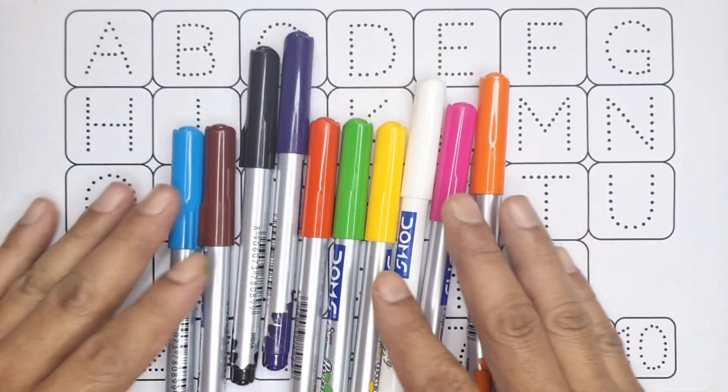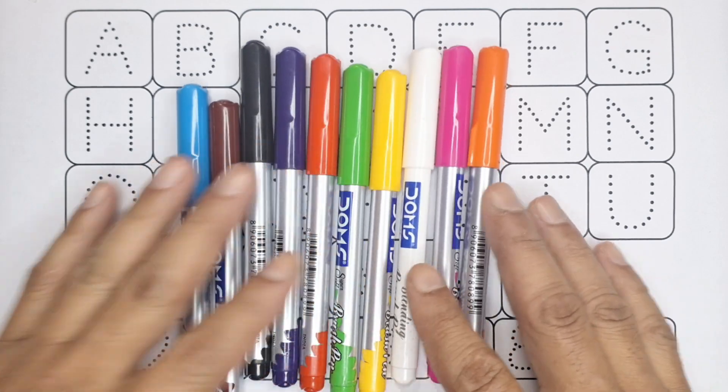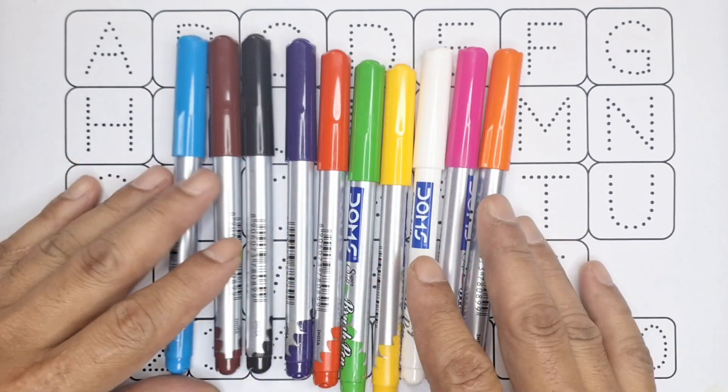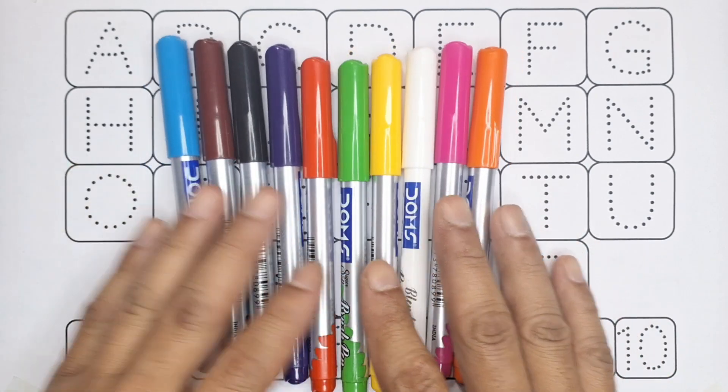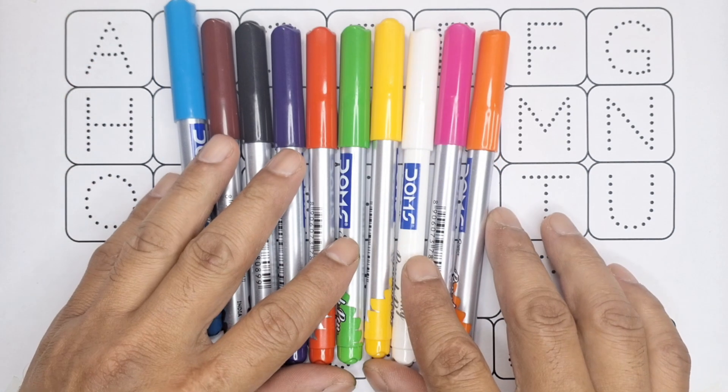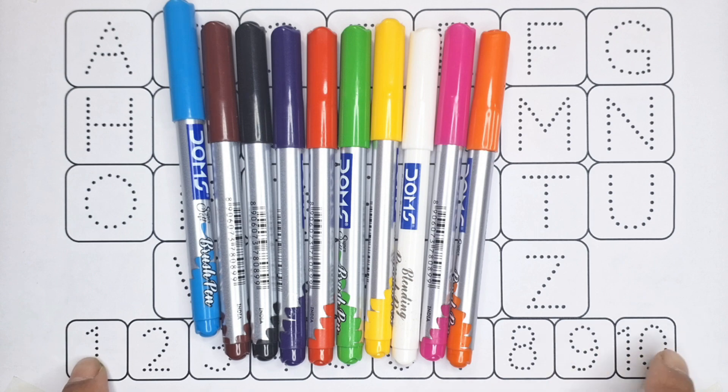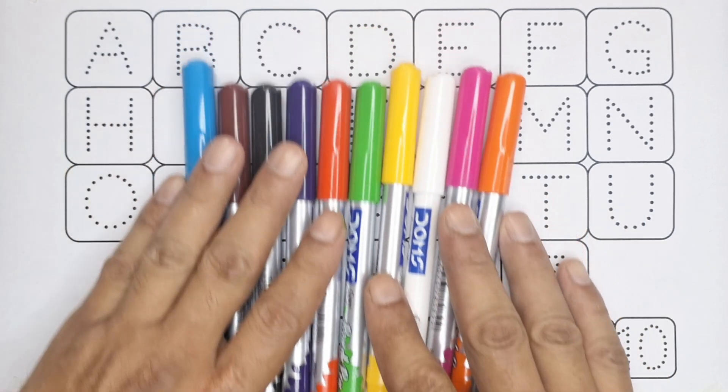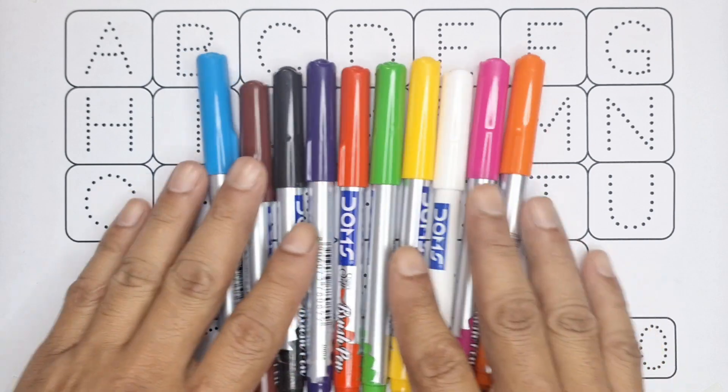Hello kids, welcome to my channel. Today's video we are going to learn the English alphabet letters from A to Z and the counting number from 1 to 10. So this is our colors, so let's learn the name of colors.